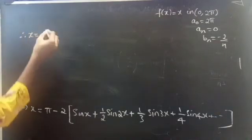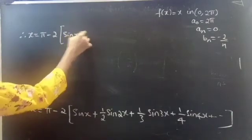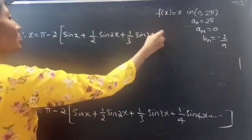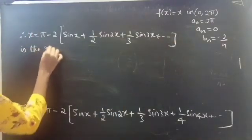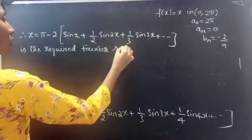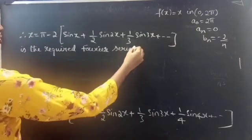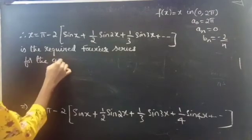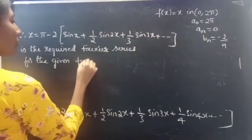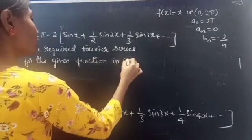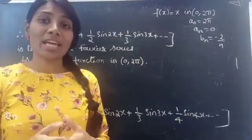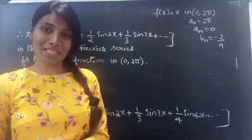Therefore, x equals π minus 2 times [sin(x) plus 1 by 2 times sin(2x) plus 1 by 3 times sin(3x) plus so on], valid in the open interval (0, 2π). This completes the problem. We have seen a problem from Fourier series in this video. Hope you understand. See you in the next video. Bye-bye.